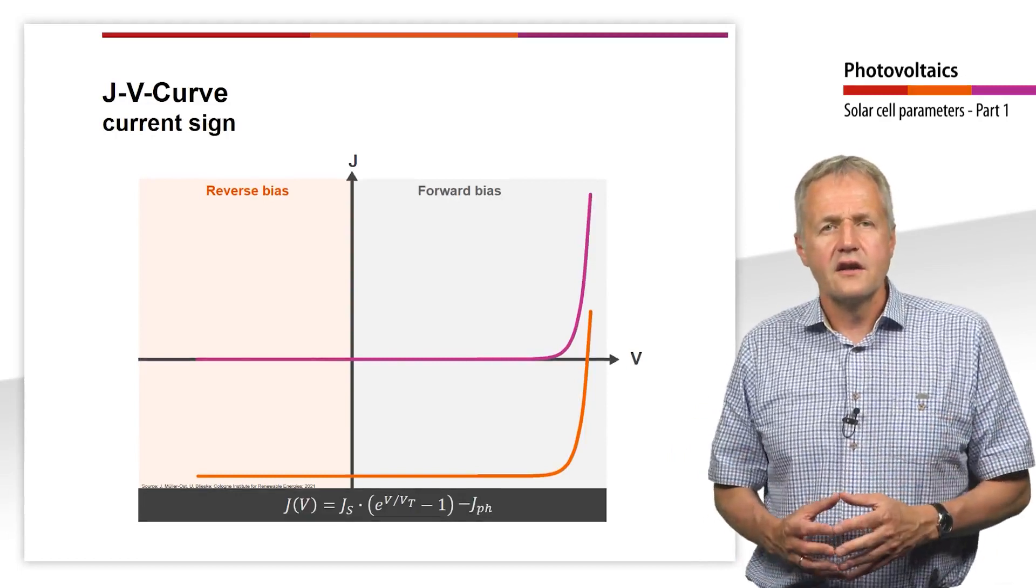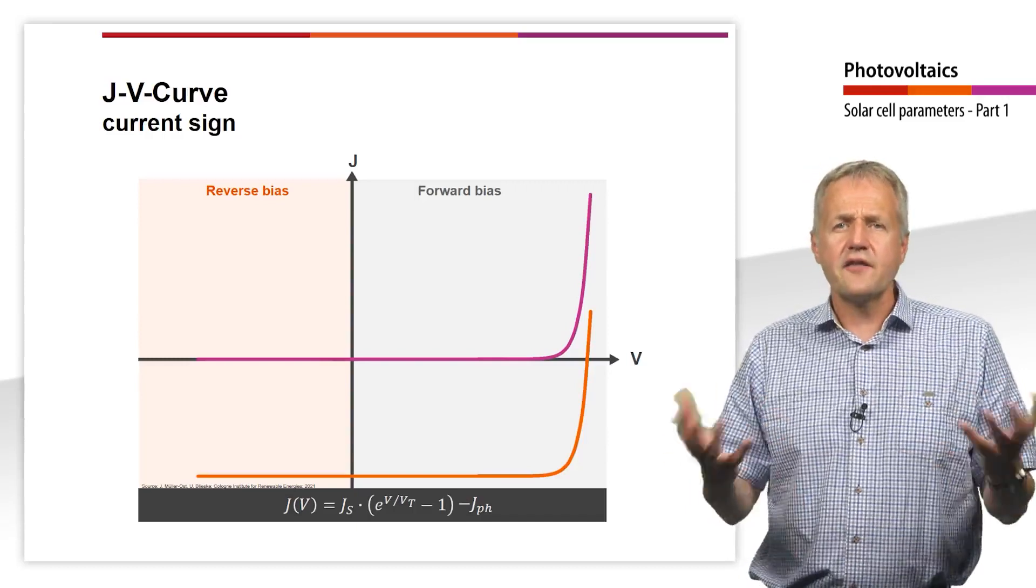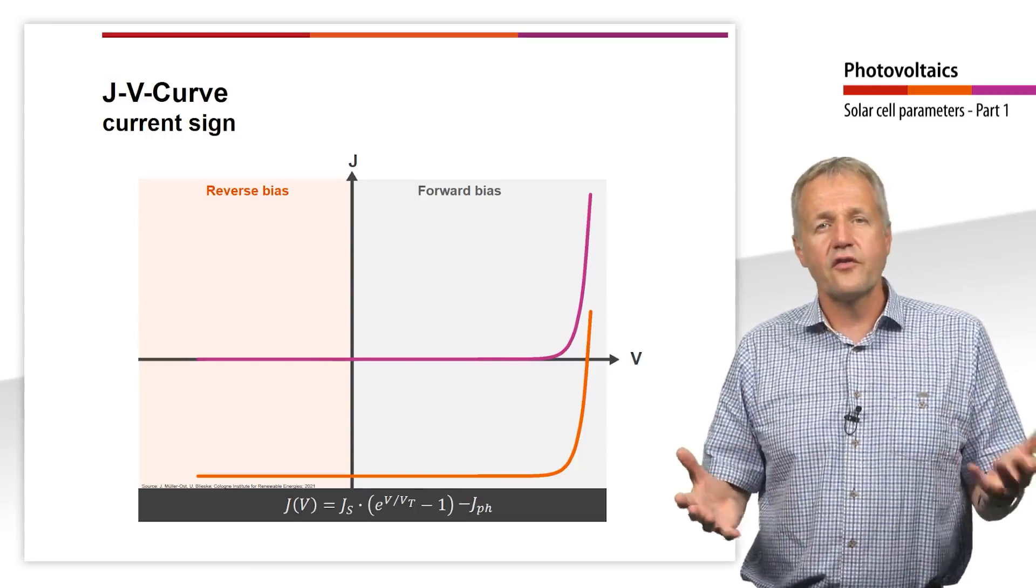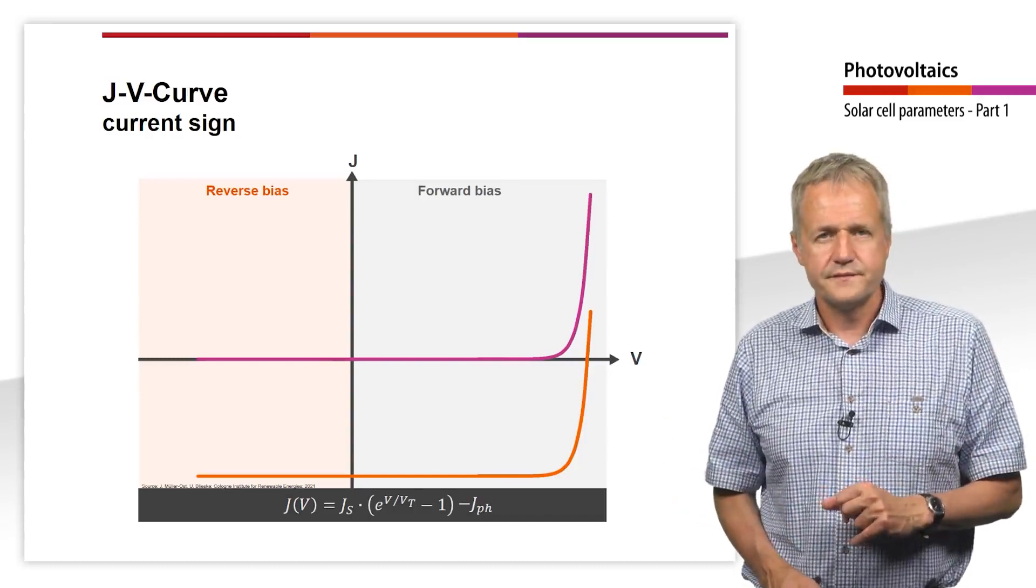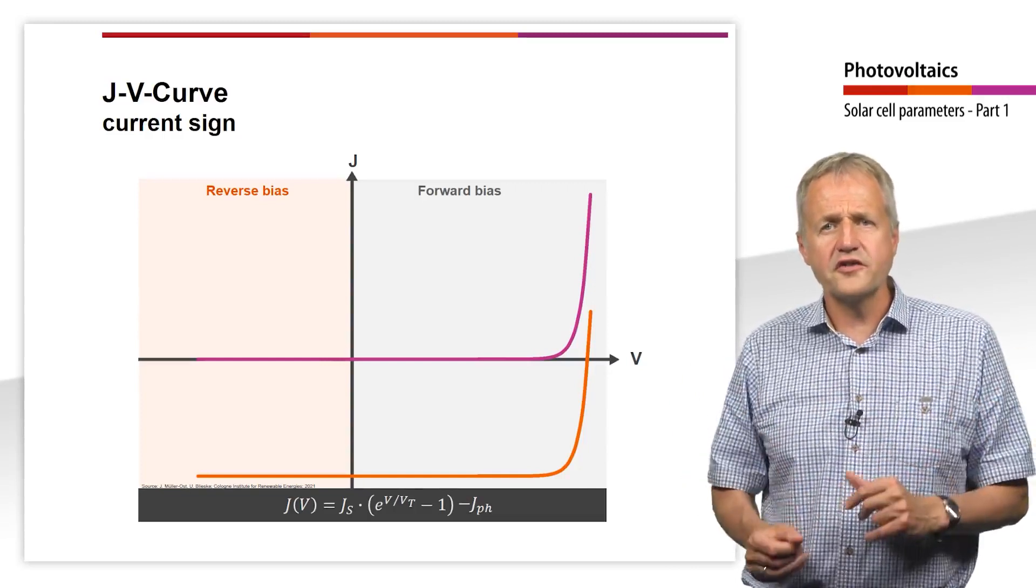First of all, let's take a closer look at what information we can get from the JV characteristic curve of a solar cell.